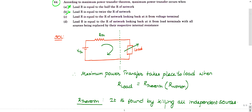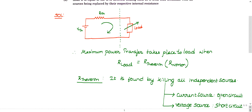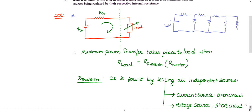Let me quickly explain the Maximum Power Transfer Theorem. Suppose there is a voltage source of 20 volts, and there are many resistances in the network. Finally, a load resistance RL is connected. The question is: what value of RL will result in maximum power being transferred to the load?